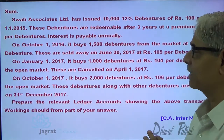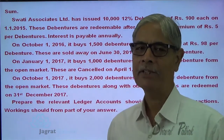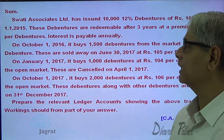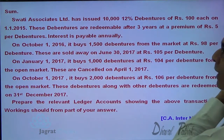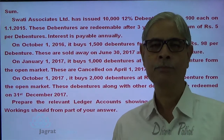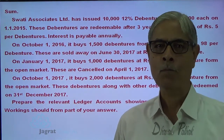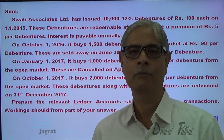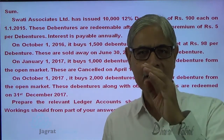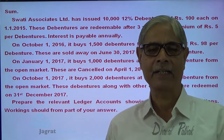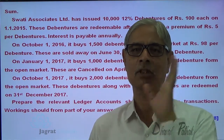In 2016, the first transaction takes place. On 1st of October, it buys 1,500 debentures from the open market. These own debentures are purchased but not cancelled — they are purchased from the open market and sold on 30th June 2017 at Rs. 105 per debenture. When we purchase the debenture, we have to pay interest, just like we pay interest when we purchase an investment. These debentures were held by me on 31st of December 2016, so the debenture interest payment will be bifurcated into two parts: debenture interest payable to outsiders and debenture interest due on own debentures.